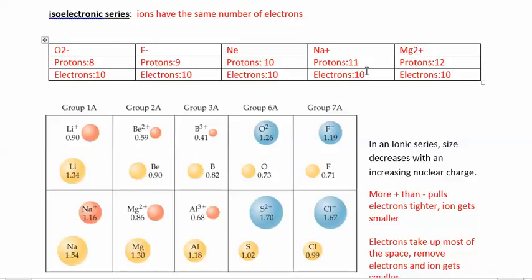This is an isoelectronic series because they all have the same number of electrons. You have a whole bunch of ions here — some are positive, some are negative, some gained electrons, some lost electrons — in order to be isoelectronic.